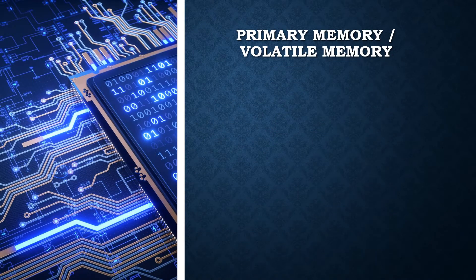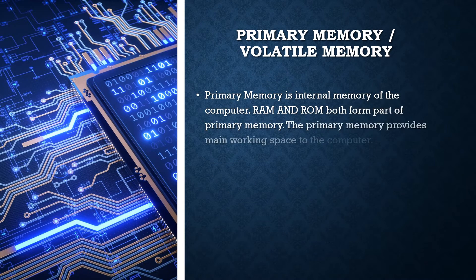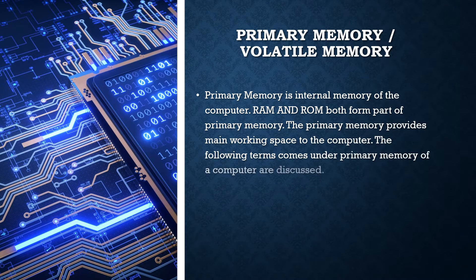Let's study about primary memory. Primary memory is the internal memory of the computer. RAM and ROM both form part of primary memory. The primary memory provides the main working space to the computer. The following terms come under primary memory of a computer.